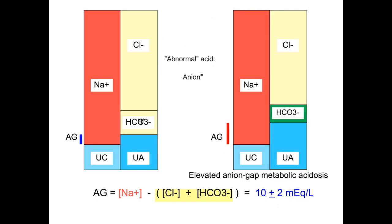While the anion, lactate, beta-hydroxybutyrate or whatever, is added to the unmeasured anions in the serum. Calculation of the anion gap now yields a high value, serving as a clue to the presence of an abnormal amount of an organic acid.